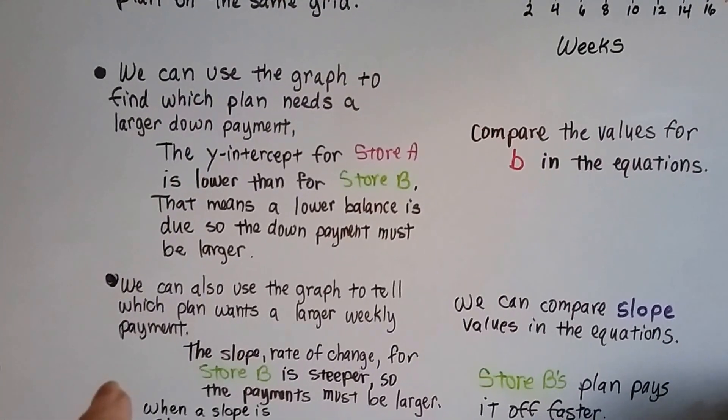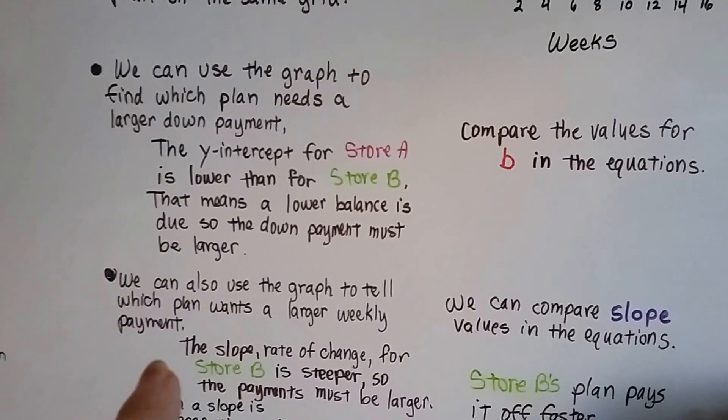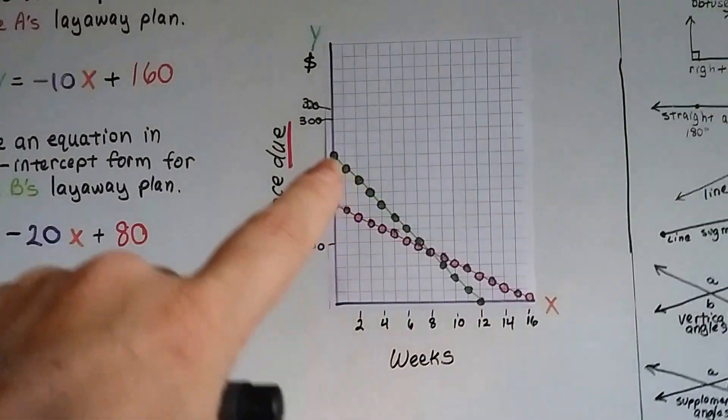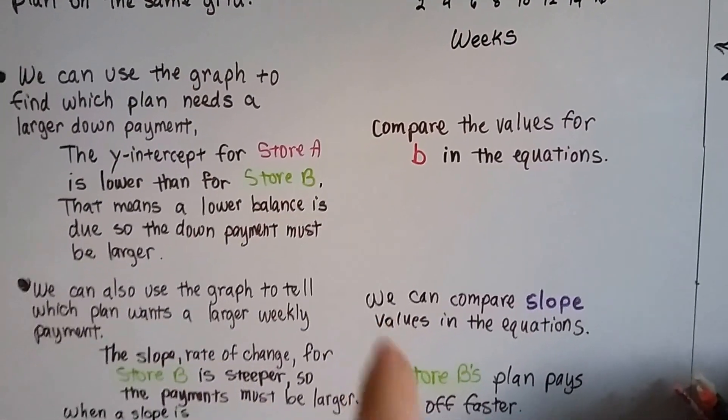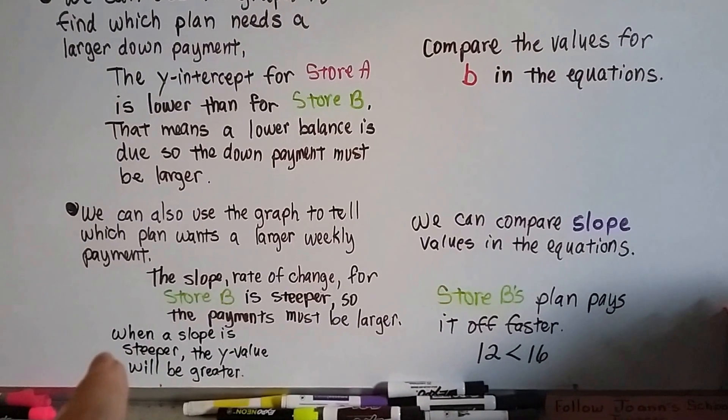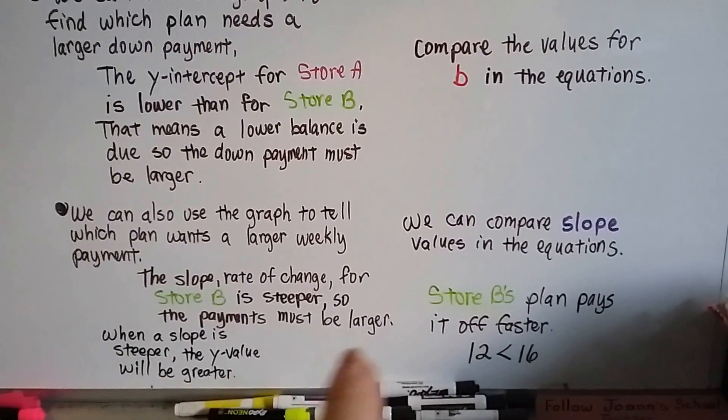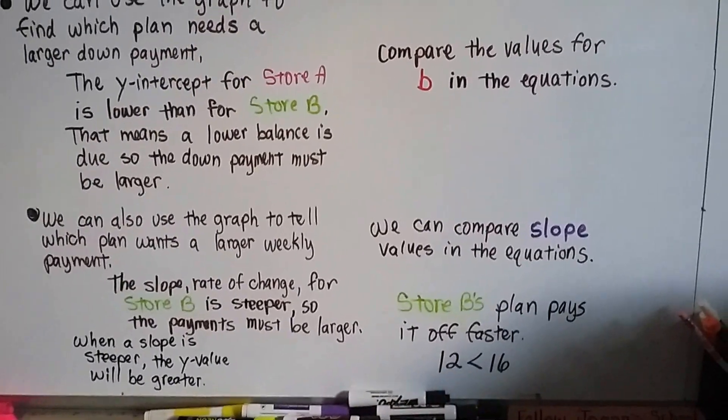We can also use the graph to tell which plan wants a larger weekly payment. The slope rate of change for store B is steeper, so the payment must be larger. It's going down quicker. We can compare slope values in the equations. When a slope is steeper, the y-value will be greater. Store B's plan pays it off faster. 12 is less than 16.